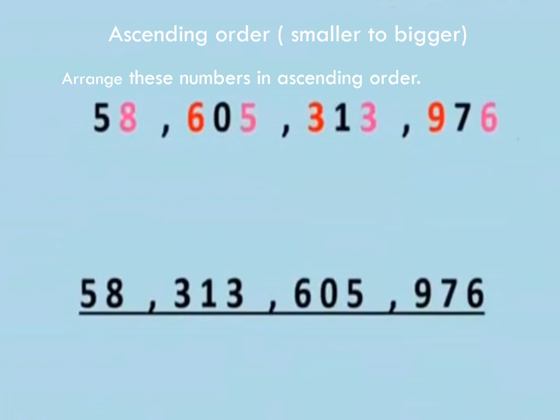Here we have some numbers: 58, 605, 313, 976. In these all numbers, only 58 is in tens and others are in hundreds. So first of all we have to write 58, then we will find the smaller number in the remaining three numbers. 313 is bigger than 58, then 605 is bigger, and the biggest number is 976.